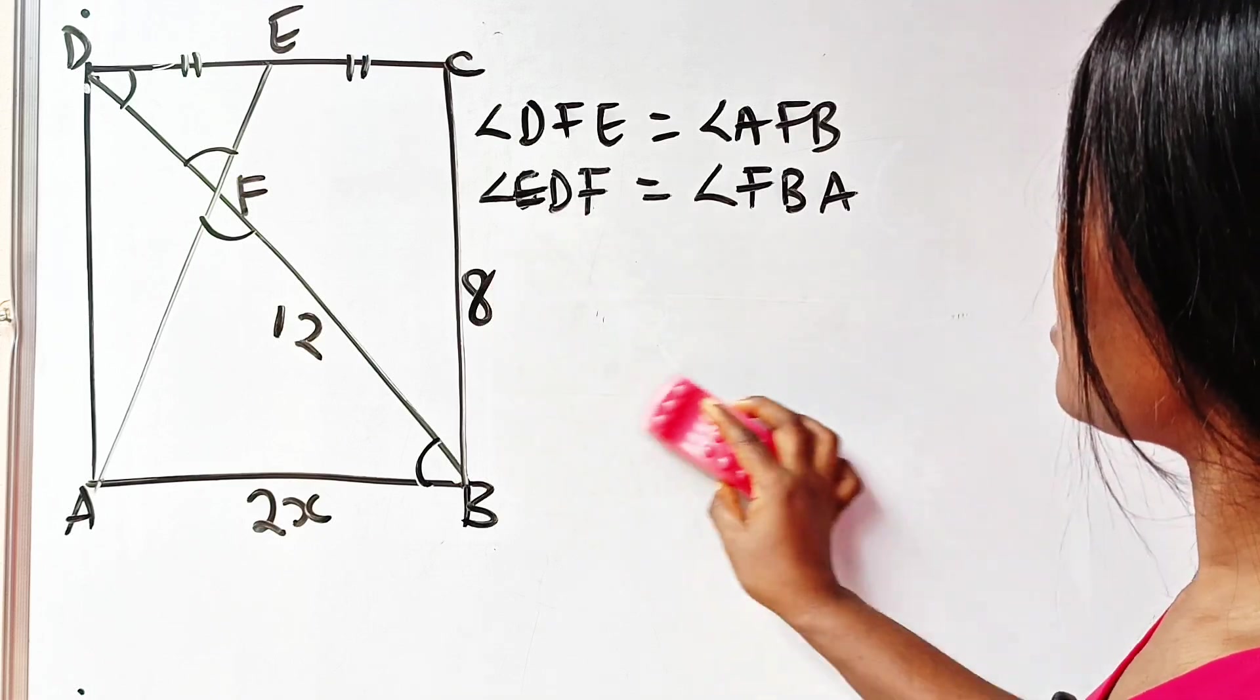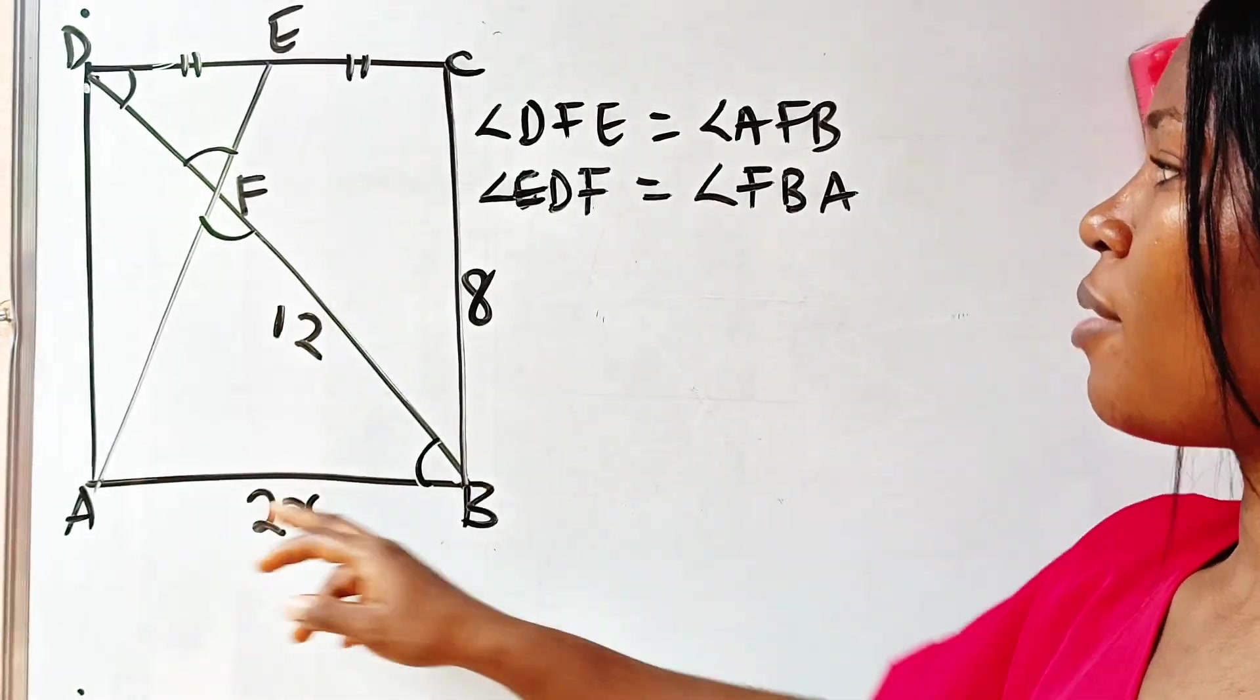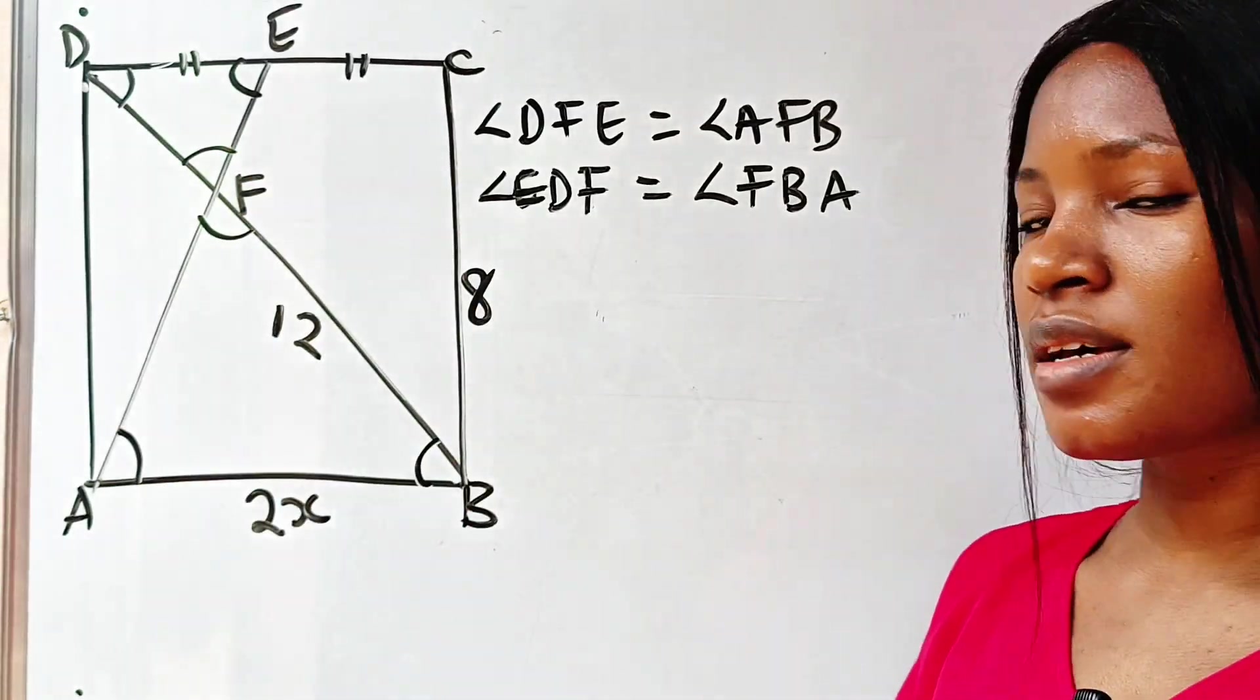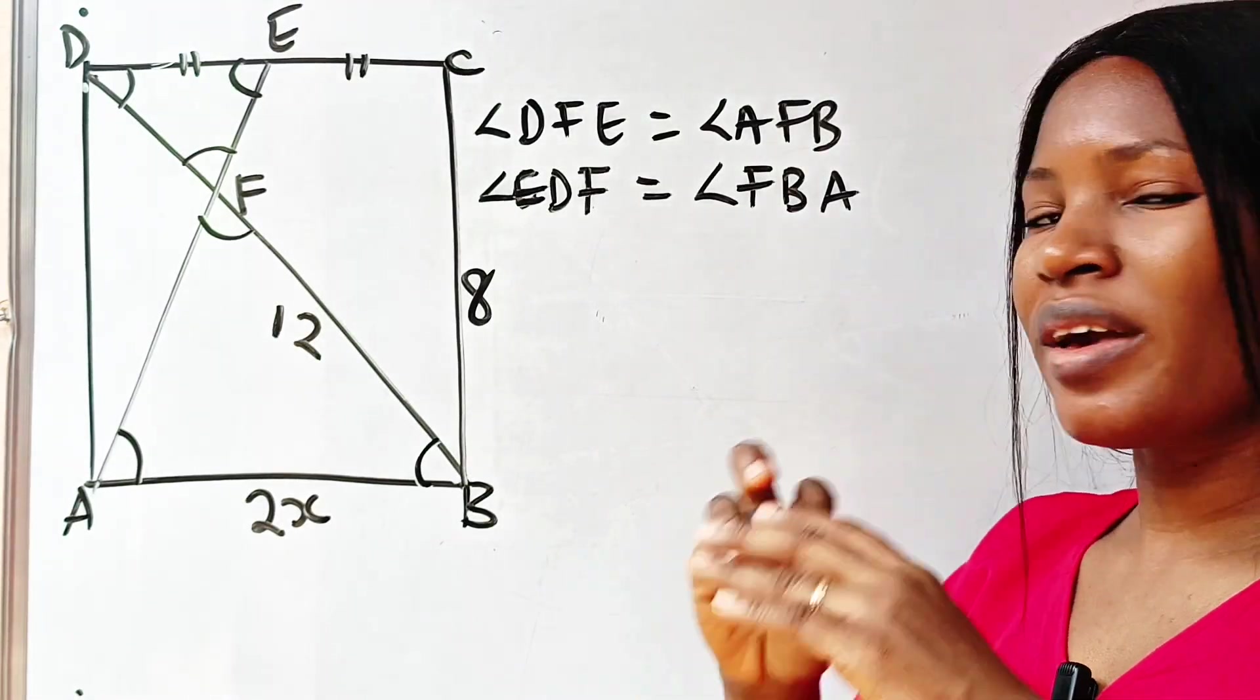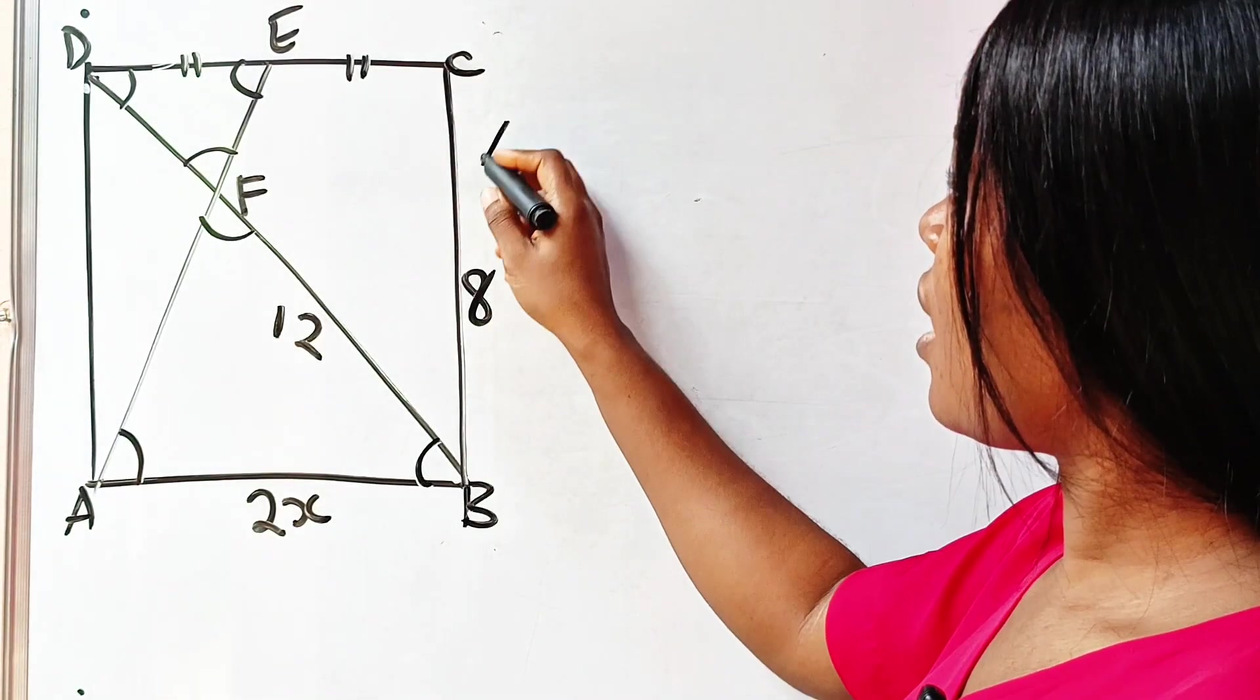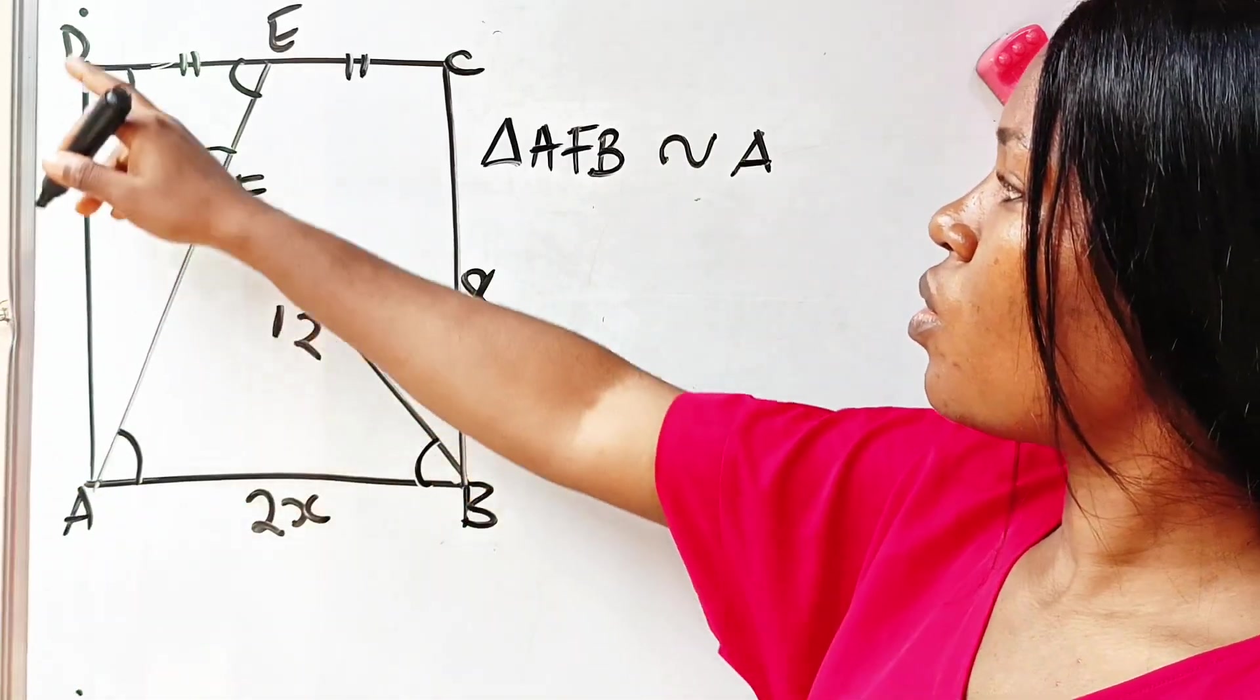So as a result of that, alternate angles are equal to angle FBA. Then the two triangles are equal, meaning that the remaining one is also equal to the other side. The same thing—alternate angles are equal. So in conclusion, this simply means that triangle AFB is similar to triangle DEF.